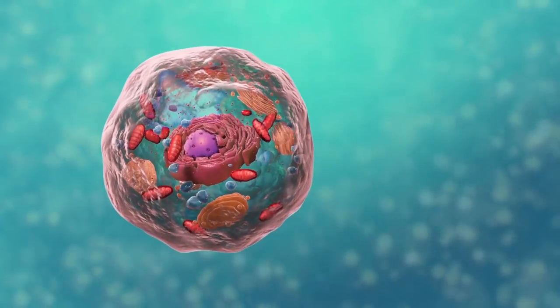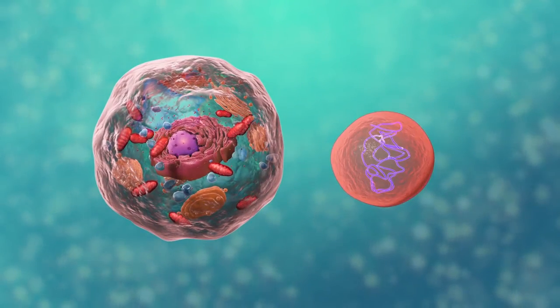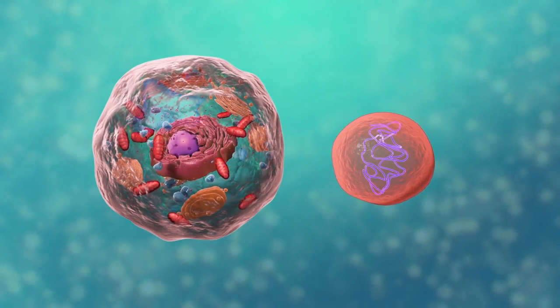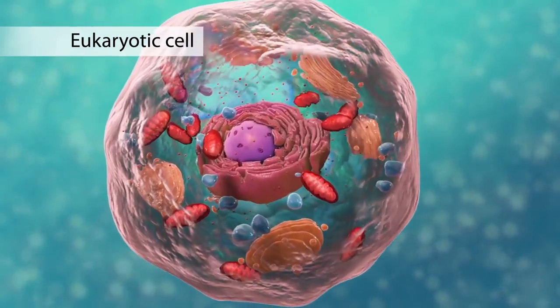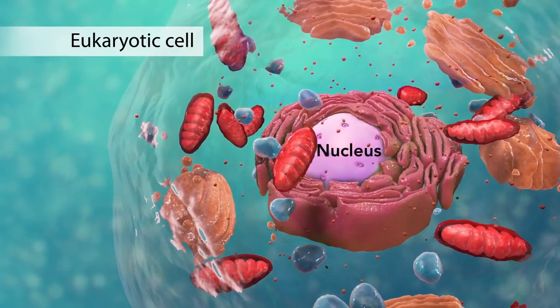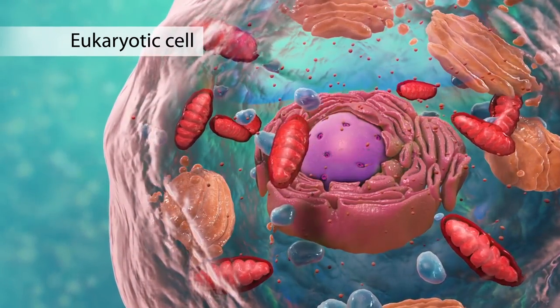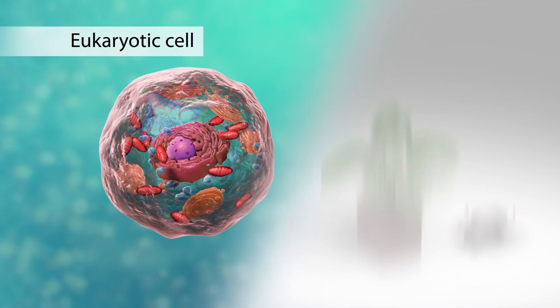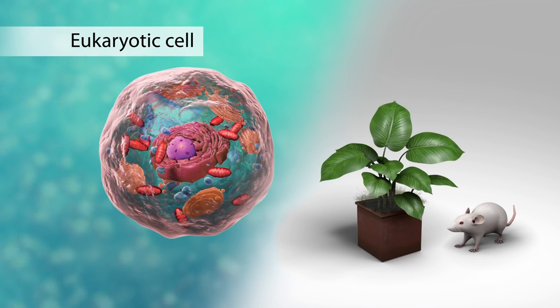There are two broad categories of cells. The first category is eukaryotic cells. They have organelles which include the nucleus and other special parts. Eukaryotic cells are more advanced complex cells such as those found in plants and animals.